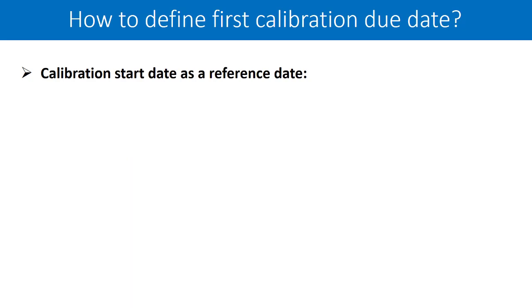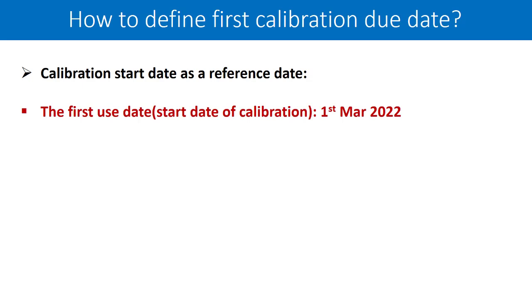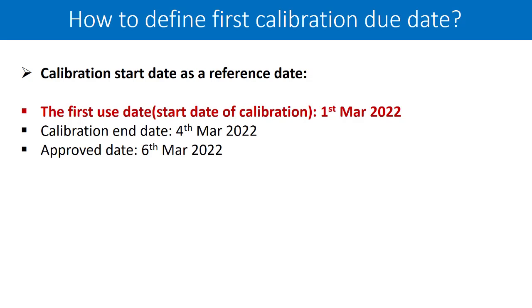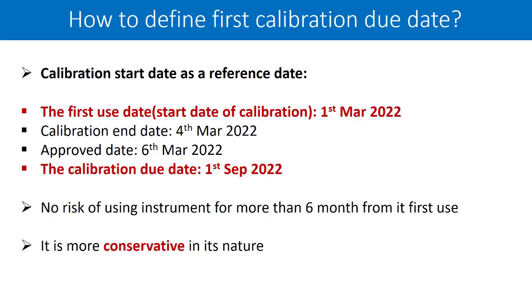Let us talk about the third approach — considering the calibration start date as the reference date. The first use date, or the start date of calibration, is 1st March 2022. Calibration end date is 4th March 2022, and the calibration approval date is 6th March 2022. If I calculate 6 months from the start date as my reference date, it becomes 1st September 2022. There is no risk of using the instrument for more than 6 months from its first use. This is the more conservative approach in its nature — I am not allowing usage of the instrument beyond 6 months from its first use.